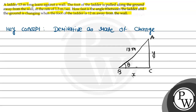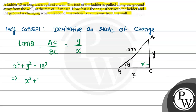If we consider tan theta, the equation will be: tan theta is equal to the opposite side divided by adjacent, which gives us y upon x. One more thing — we apply the Pythagorean theorem, because this is a 90-degree angle. So x squared plus y squared is equal to 13 squared, which gives us x squared plus y squared equals 169.